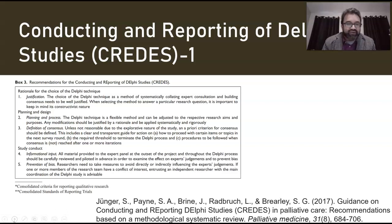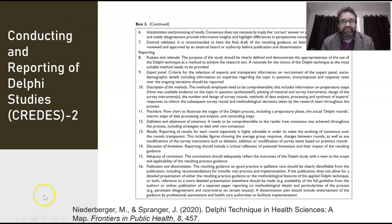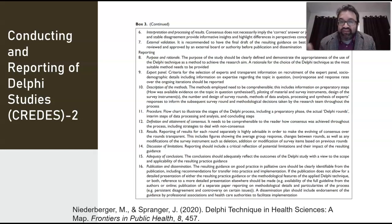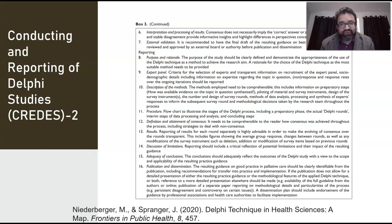The study conduct covers how informational the process is and how to prevent biases. Interpreting and processing results are extremely important. There are about eight reporting standards: purpose and rationale; the expert panel and criteria for choosing experts; flow charts illustrating the stages of the process — preparatory rounds, preparatory phases, Delphi rounds, interim steps; results; discussion of limitations; adequacy of conclusions; and finally publication and dissemination.